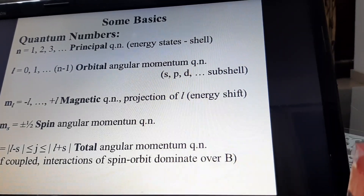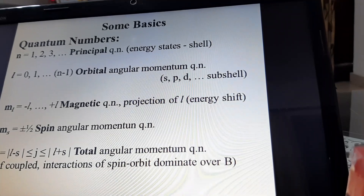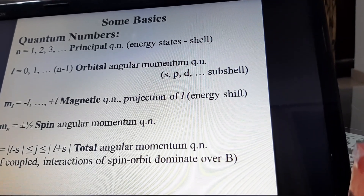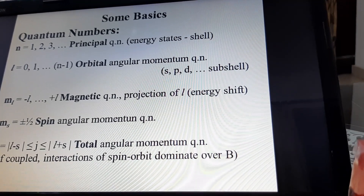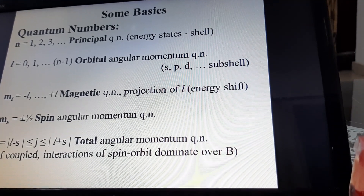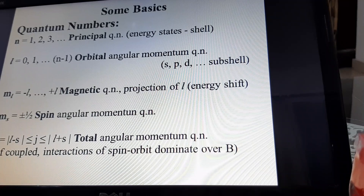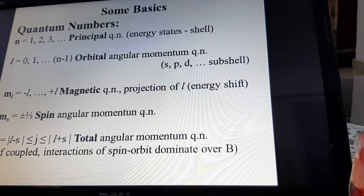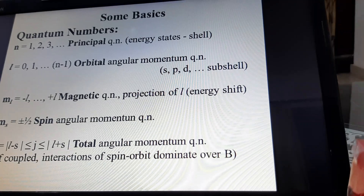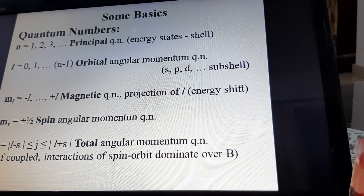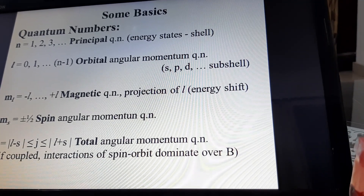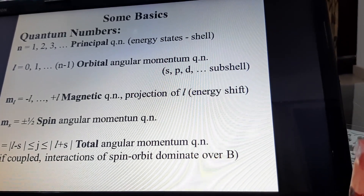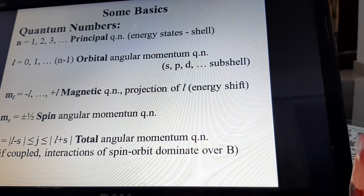Before discussing the Zeeman effect, I will discuss some basics about quantum mechanics. First of all, we will discuss the quantum numbers. Quantum numbers are the numbers which describe the complete information of an electron inside the atom. The first quantum number is the principal quantum number. It is represented by n, and the values for n are 1, 2, 3, and so on.